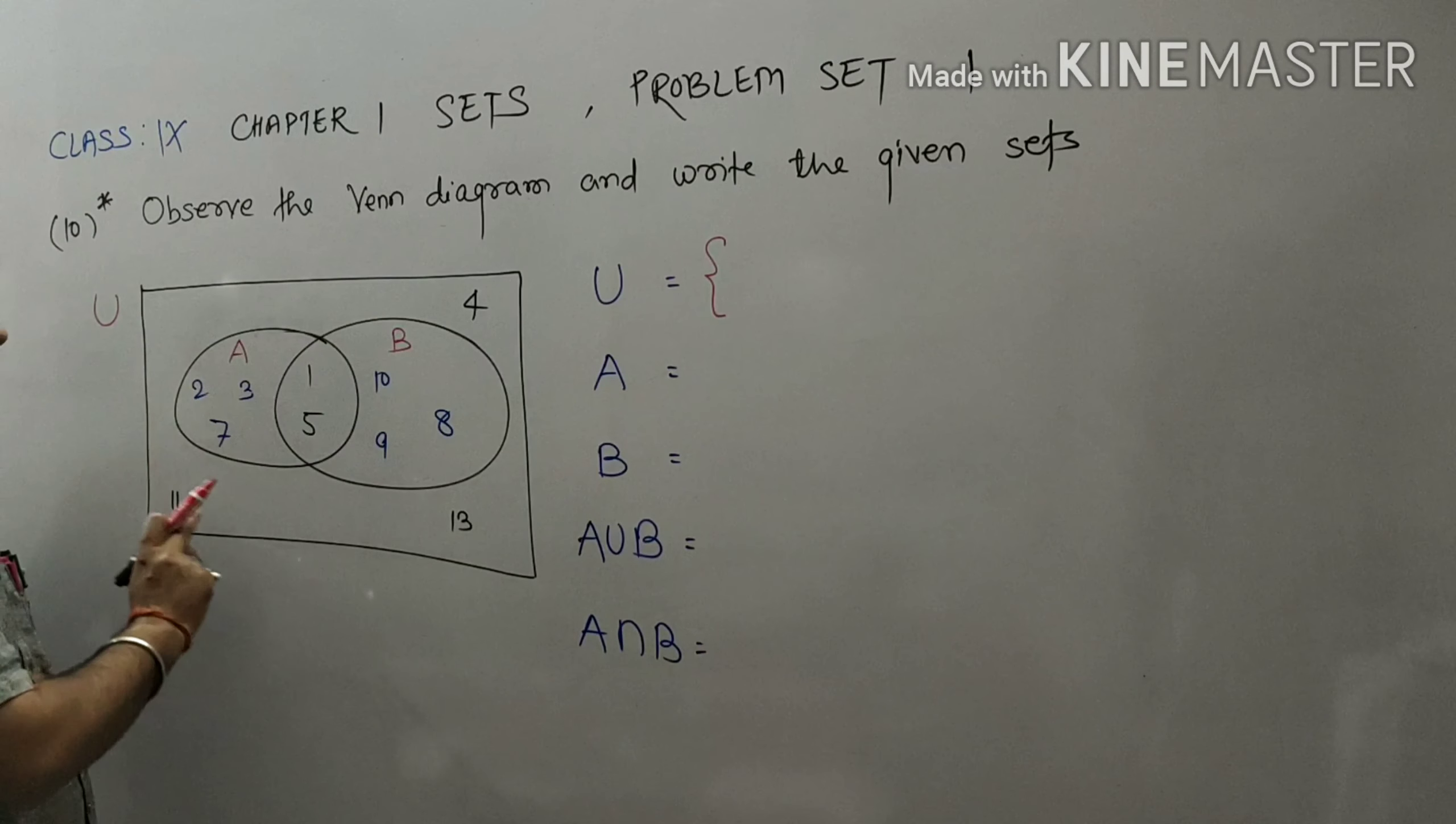Now students, write all the elements of this universal set. So write 1, 2, 3, 4, 5, 7, 8, 9, 10, 11, and 30.